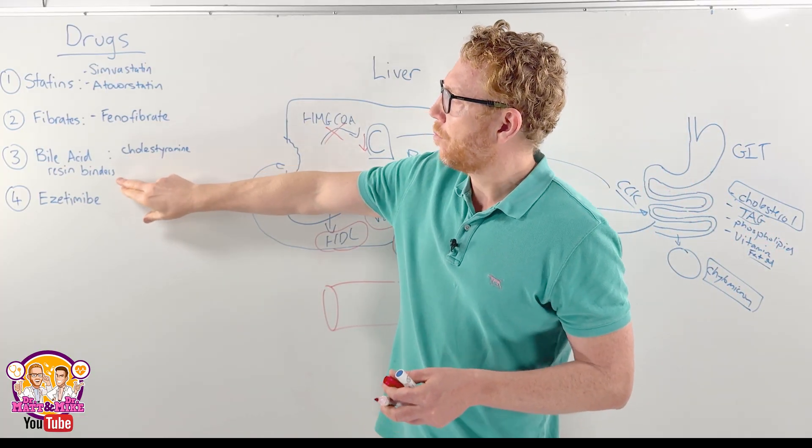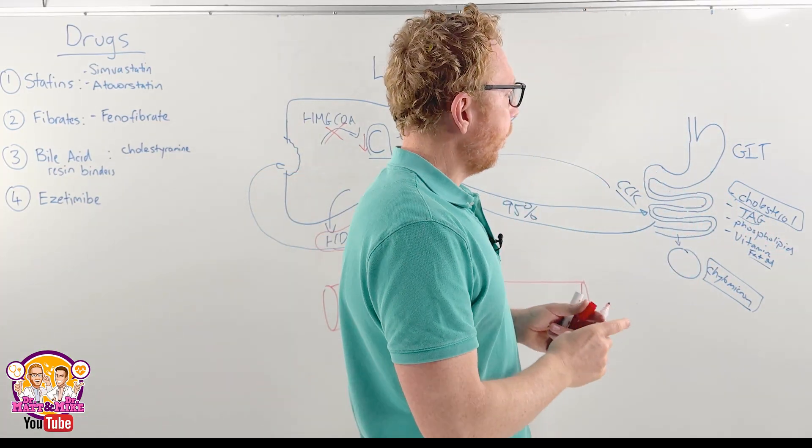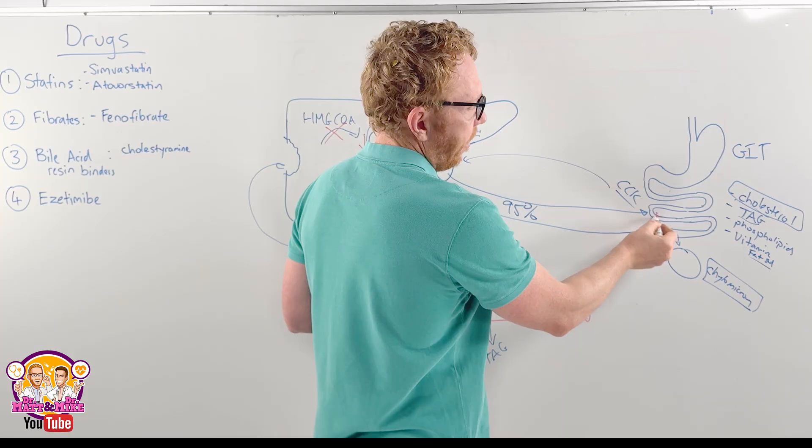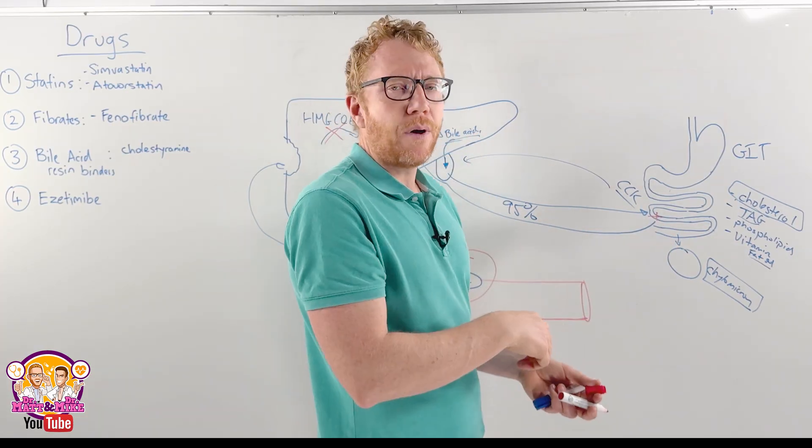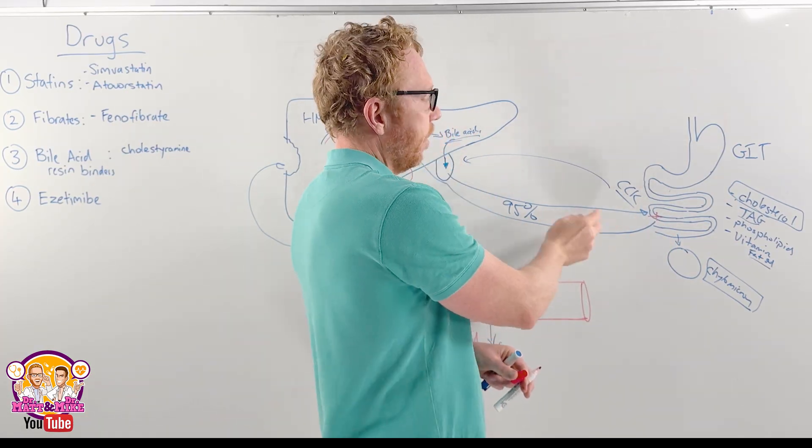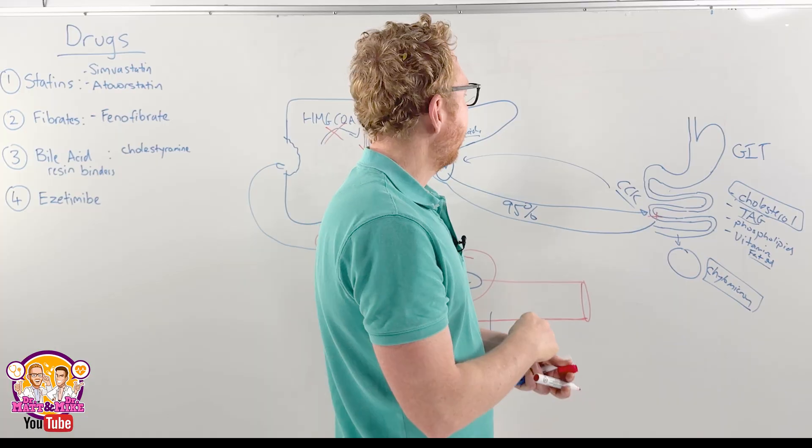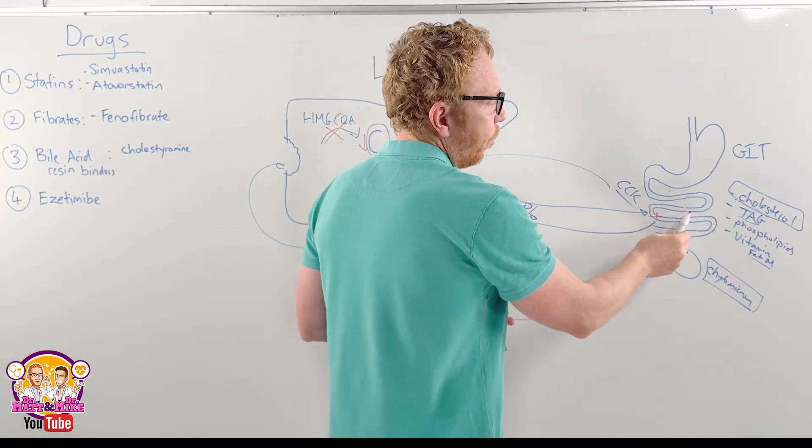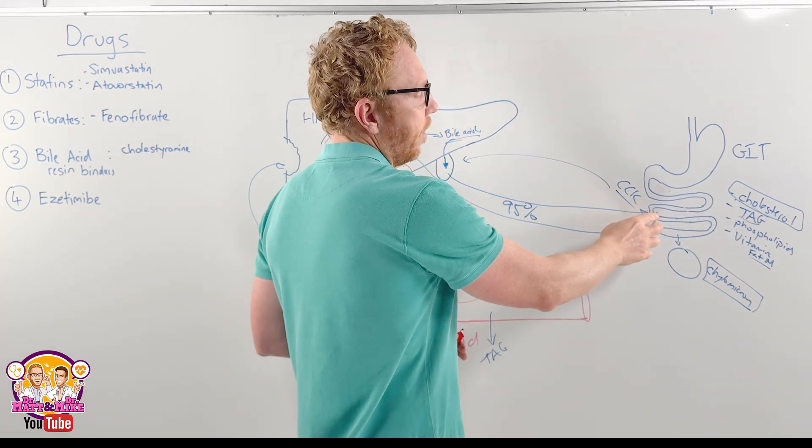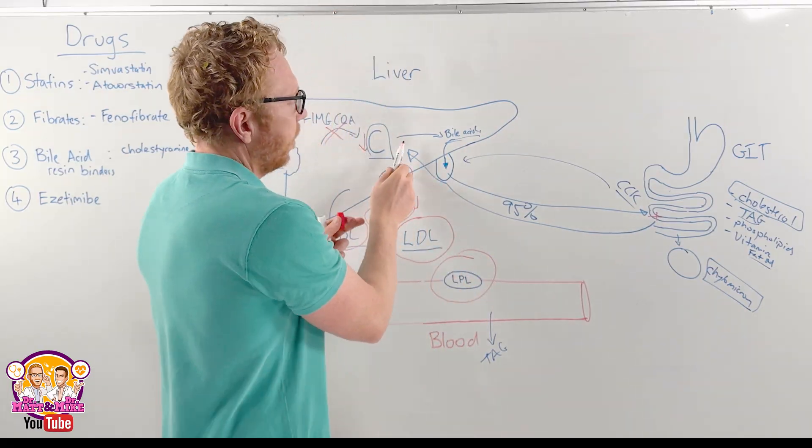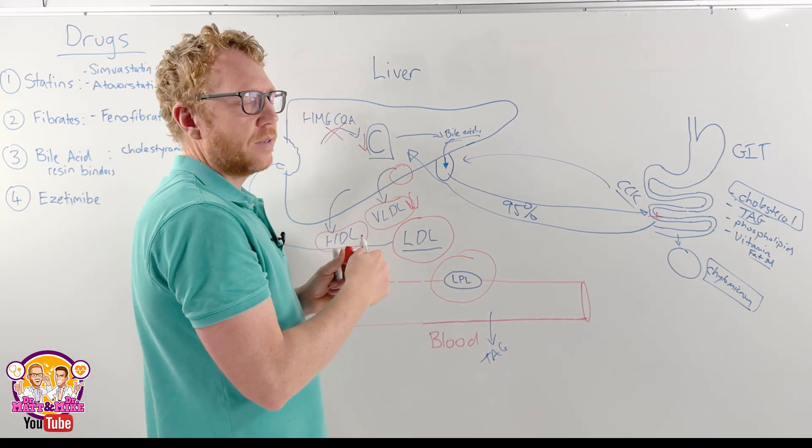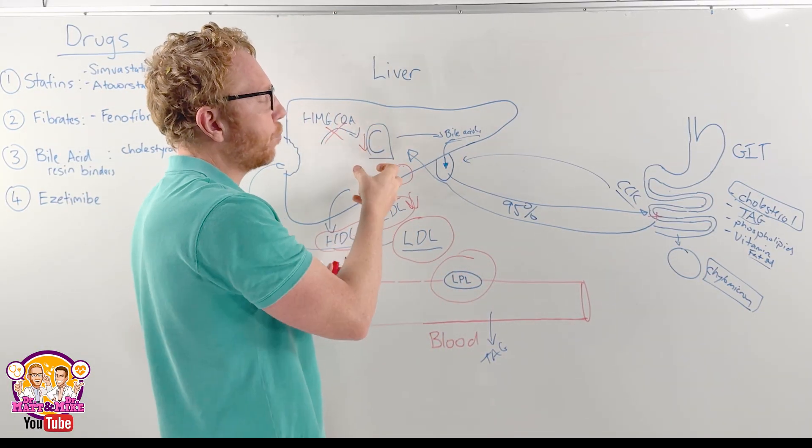Moving to the bile acid resin binders, these work by blocking the reuptake of the bile acids back into the portal system back into the liver. Therefore, we're losing more cholesterol in feces.